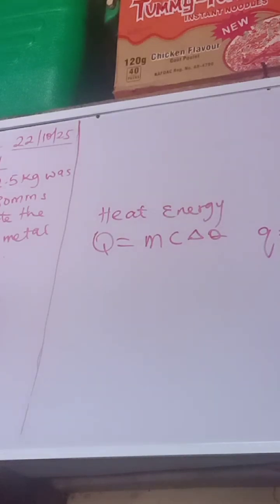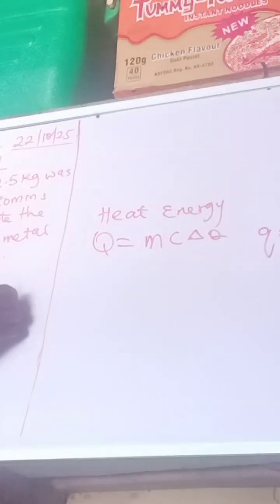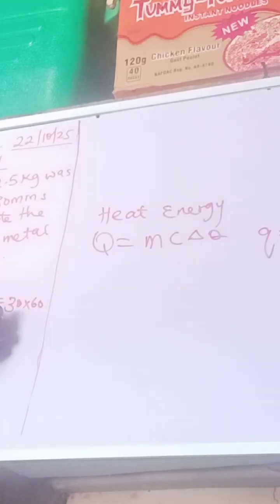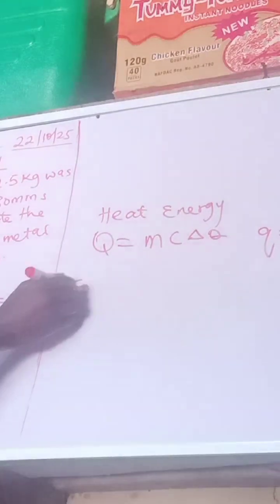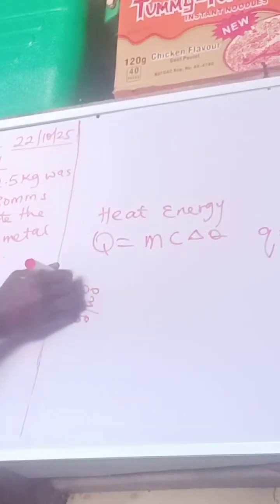We have time given as 30 minutes. So we change minutes to seconds: 30 times 60, which gives us 1800 seconds. I always add the zero here and just use 30 — so 3 times 600 is 1800.